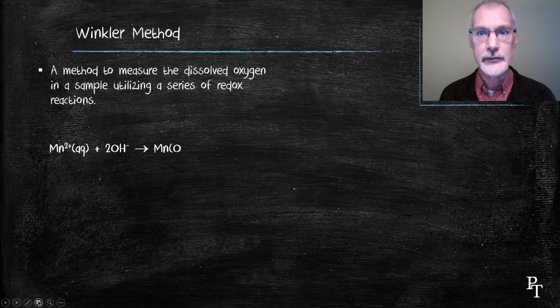Now let's take a little closer look at how one measures the amount of dissolved oxygen. This technique is called the Winkler method, and it's a means of measuring the dissolved oxygen present in a stream of water through a series of redox reactions. In fact, there's four of them that take place sort of sequentially.